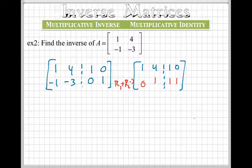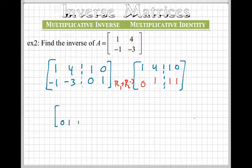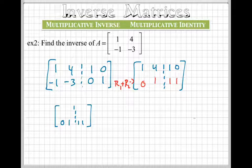So let me write down what's not changing. The bottom row is not changing this time, so I'm going to write 0, 1, 1, 1. All those ones are really close together. And for my top row, I'm going to take row 2, multiply it by negative 4, and add it to row 1.